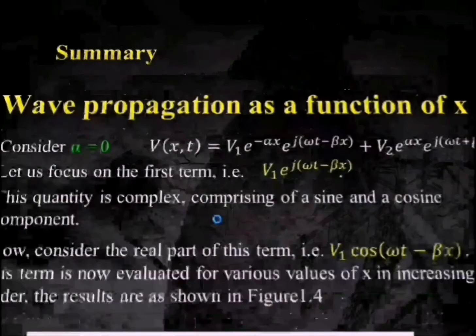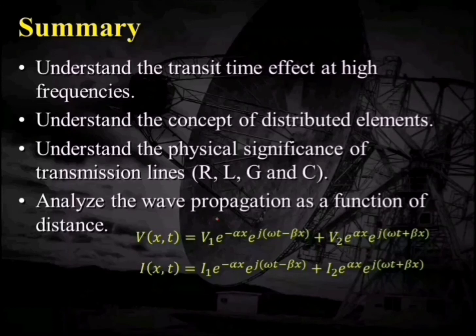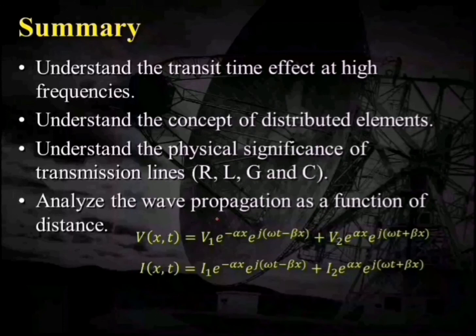In conclusion, we have understood the transient time effect at high frequencies, the concept of distributed elements, and the physical significance of the transmission lines or primary constants — resistance, inductance, conductance, and capacitance. We have also analyzed the wave propagation as a function of distance, where the wave equations were derived as v(x,t) and i(x,t).